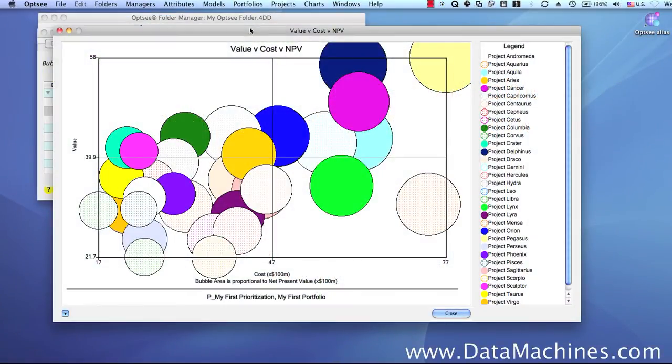Bubble charts are useful for looking at the relationships between small numbers of projects because they allow you to see three dimensions of data at once, represented by the x-axis, the y-axis, and the size of the bubble.